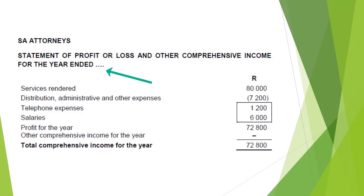This period is one year and is called the financial year of an entity. The financial year of an entity may be the same as a normal calendar year, but it may also have a different start and end date, for example 1 March to 28 February.